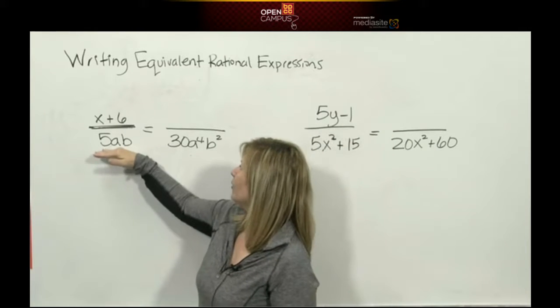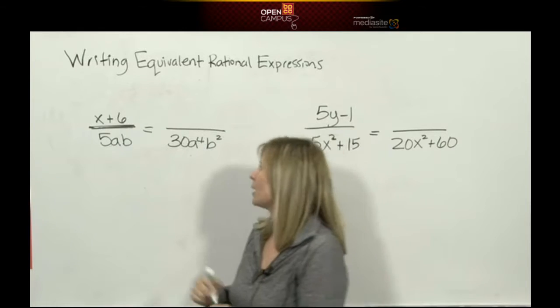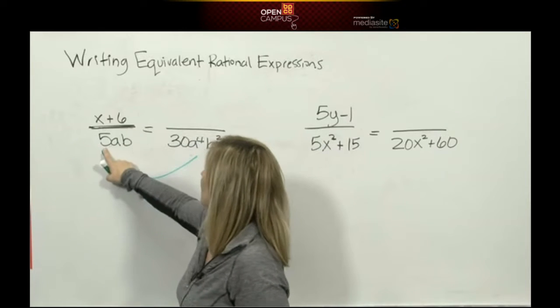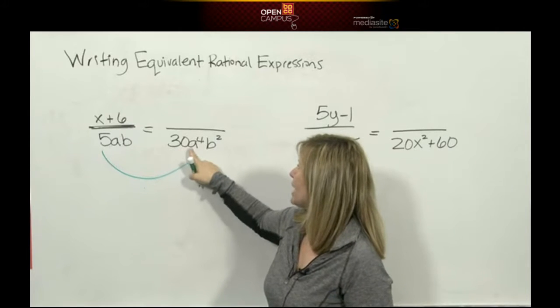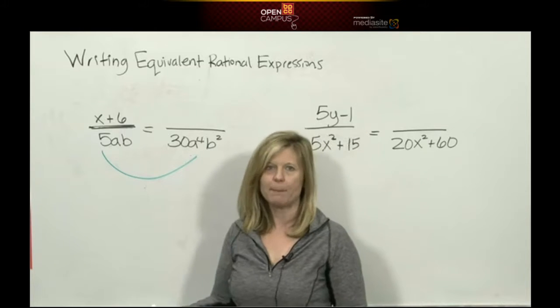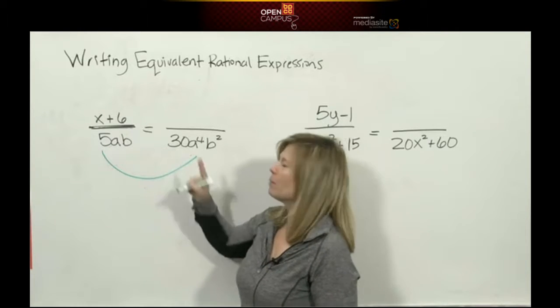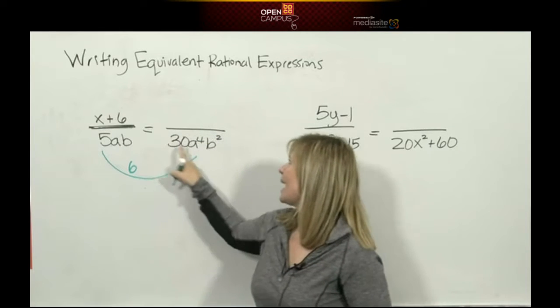So the first thing we have to figure out is how the old denominator became the new denominator. What do we multiply by? Let's look. 5ab, the old denominator, became 30a⁴b². Let's take it piece by piece. How does a 5 become a 30? Well, you multiply by 6.